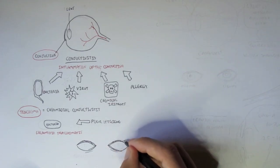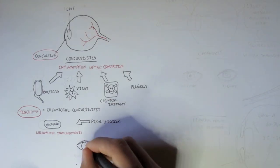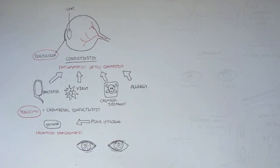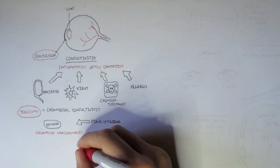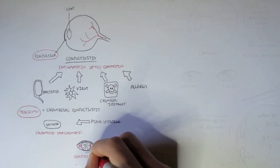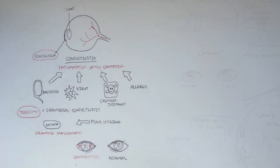A normal eye will just look something like this, a pretty good diagram, but a person suffering from conjunctivitis will have the feature of redness in the eyeball.